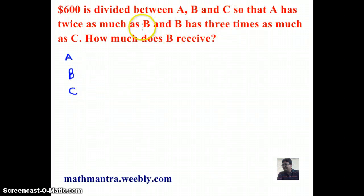And it says that A has twice as much as B and B has three times as much as C. So, let's start with C as X. So, if C has X, B is thrice of C. So, 3X.